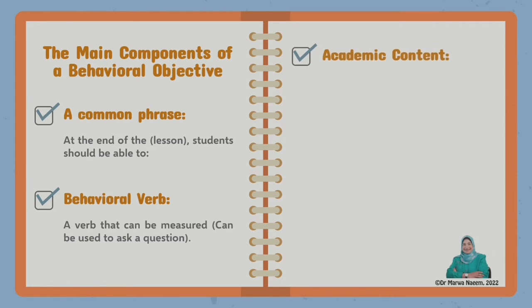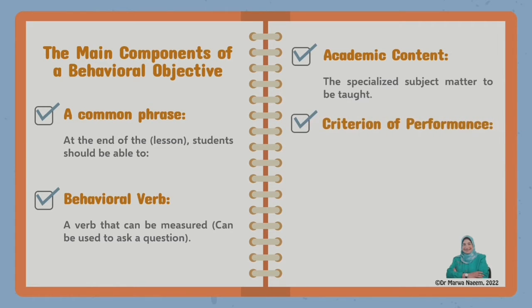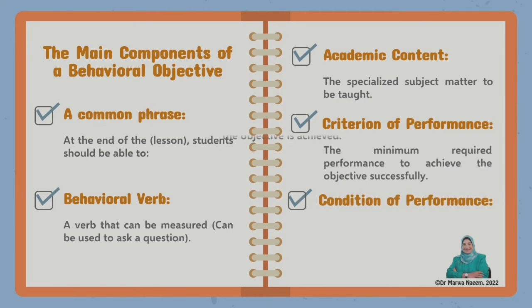Then we have the third component, which is academic content, and this is the specialized subject matter to be taught. Then the fourth component is the criterion of performance. A criterion of performance is the minimum required performance to achieve the objective successfully, and usually the criterion of performance is an adverb. Then the last component is the condition of performance. It's any condition according to which the objective is achieved.